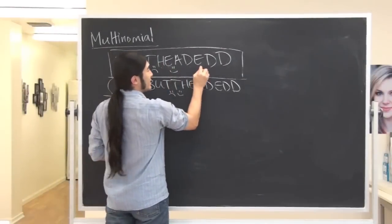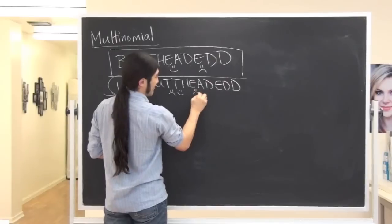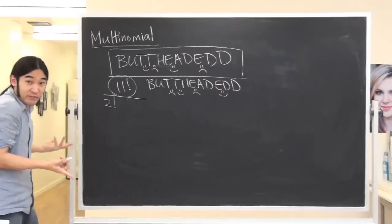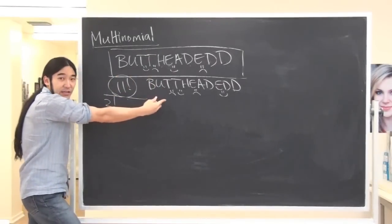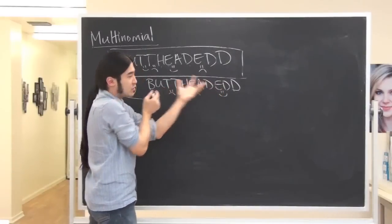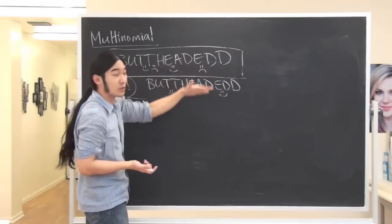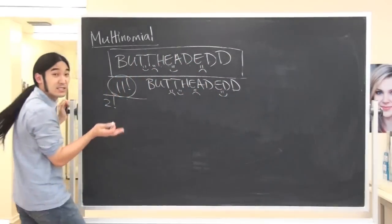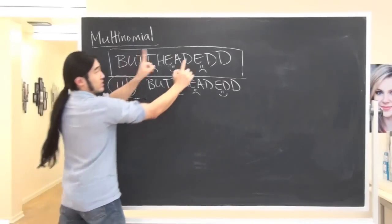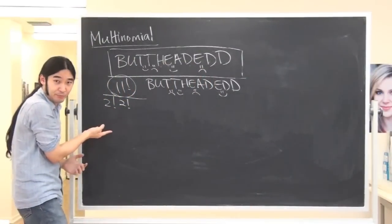Now let's look at the E's — same thing. If I had E-smiley and E-frowny and reversed the order to E-frowny and E-smiley, we counted those as different things, but looking at the letters, the words they spell are the same. So again, same mistake — I overcounted twice, and I need to divide by 2 factorial.